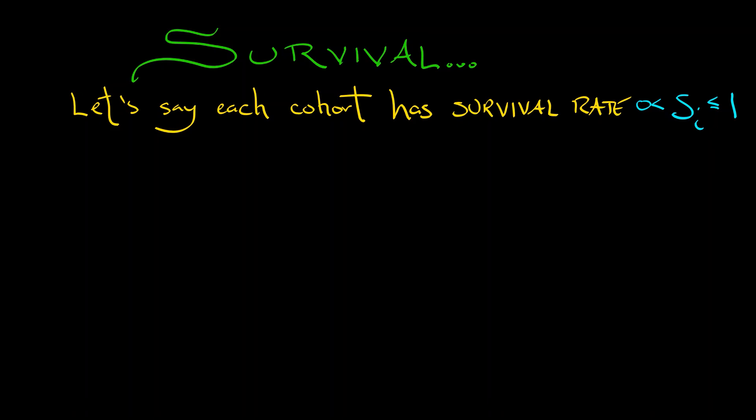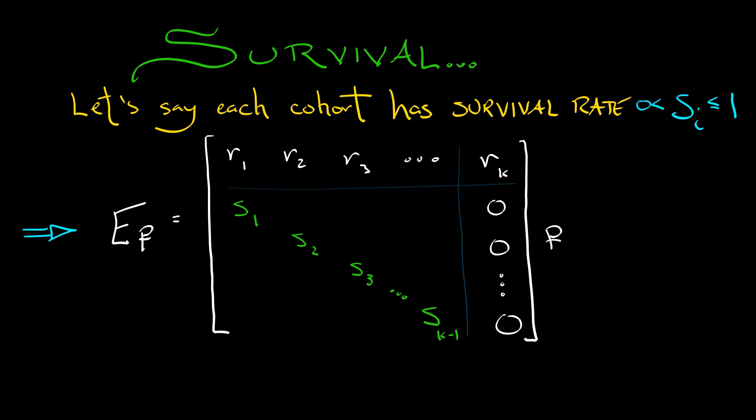Then we could modify our linear system to be EP is some matrix times P, where the matrix is just like before. You've got those birth rates R sub i along the top row, and then you've got zeros everywhere else. But on that sub diagonal square matrix, instead of having the identity, you have a diagonal matrix with entries S1, S2, S3, all the way up through, what, SK? No, SK minus 1, because this is a K minus 1 by K minus 1 square matrix. What about that last cohort? Oh, that's right. When you get to the end, you are at the end. It's as if SK equals zero.